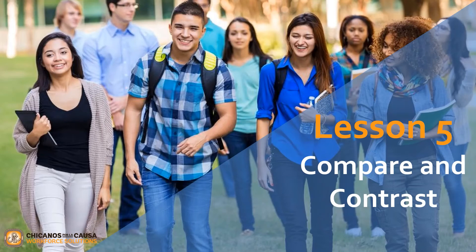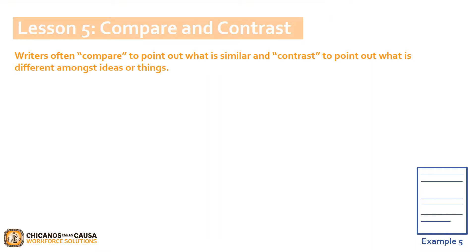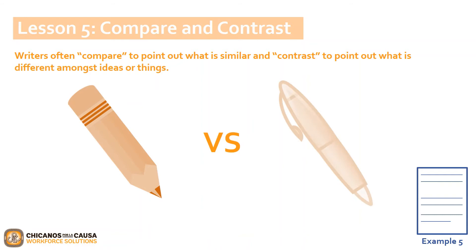Lesson 5: Comparing and Contrasting. You are probably familiar with comparing and contrasting whenever you go shopping — you do this when you compare two or more offered items of the same kind, such as cars, medicines, clothing, or even food. Writers often compare to point out what is similar and contrast to point out what is different amongst ideas. Let's use the following example to practice: a pencil versus a pen. If we compare the two, we know that they are both meant to be held and used to write with. But if we contrast the two, a pencil comes with an eraser when a traditional pen does not, a pen dispenses ink while a pencil utilizes lead, and a pencil requires sharpening while a pen does not.